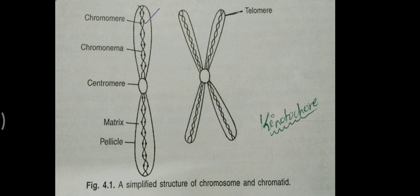Hi friends, this is a simplified structure of chromosome and chromatid. First, we have to see with respect to morphology of chromosomes and which parts are occurring in these chromosomes: centromere, chromomere, chromonimata, matrix, pellicle, and telomere — that means the end part of the chromatids or chromosomes.